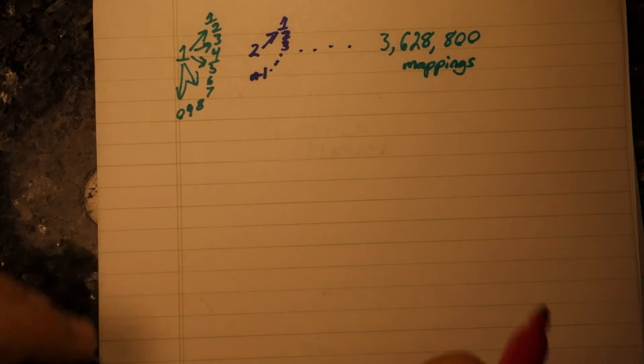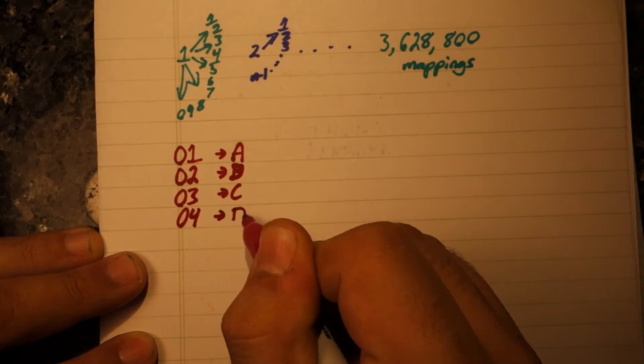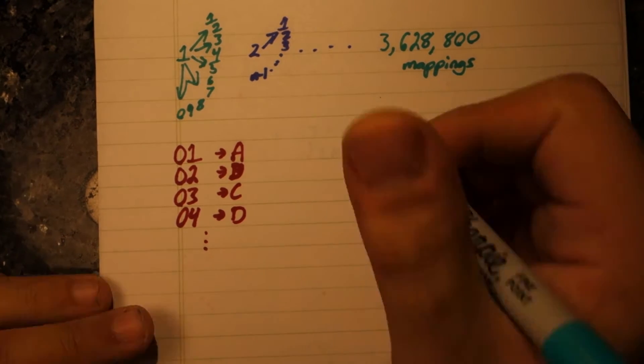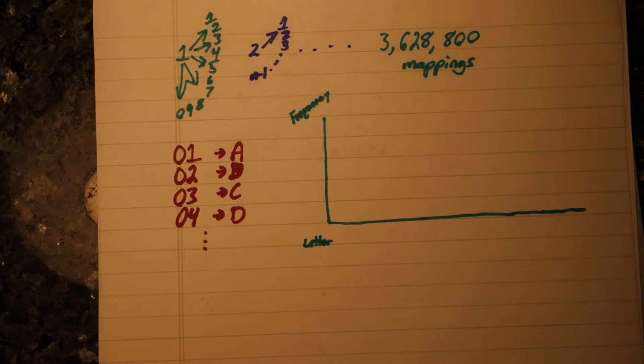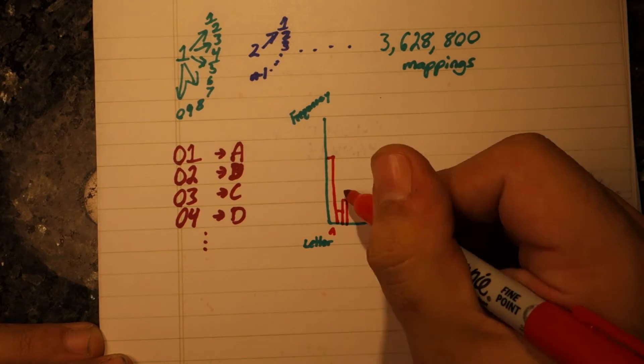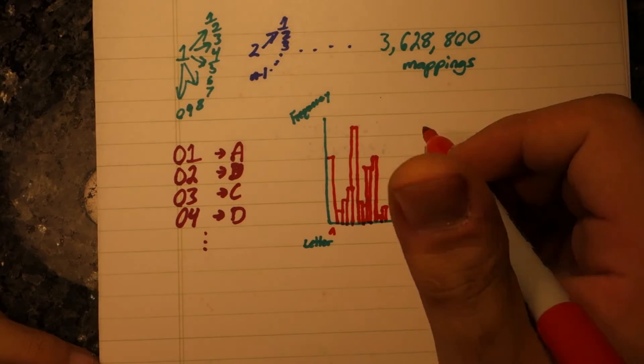But this is the real world. So let's assume that we know what the numbers mean. Let's assume that they represent letters. There's an interesting thing about letters, though. They don't all come with the same frequency. In fact, some letters are far more likely than others for a specific language.